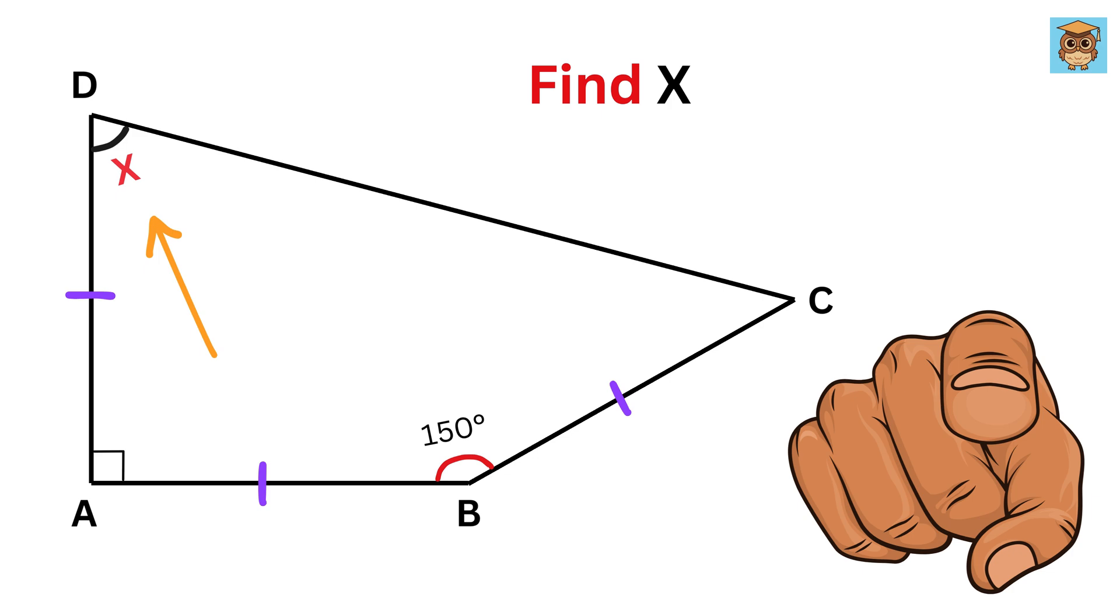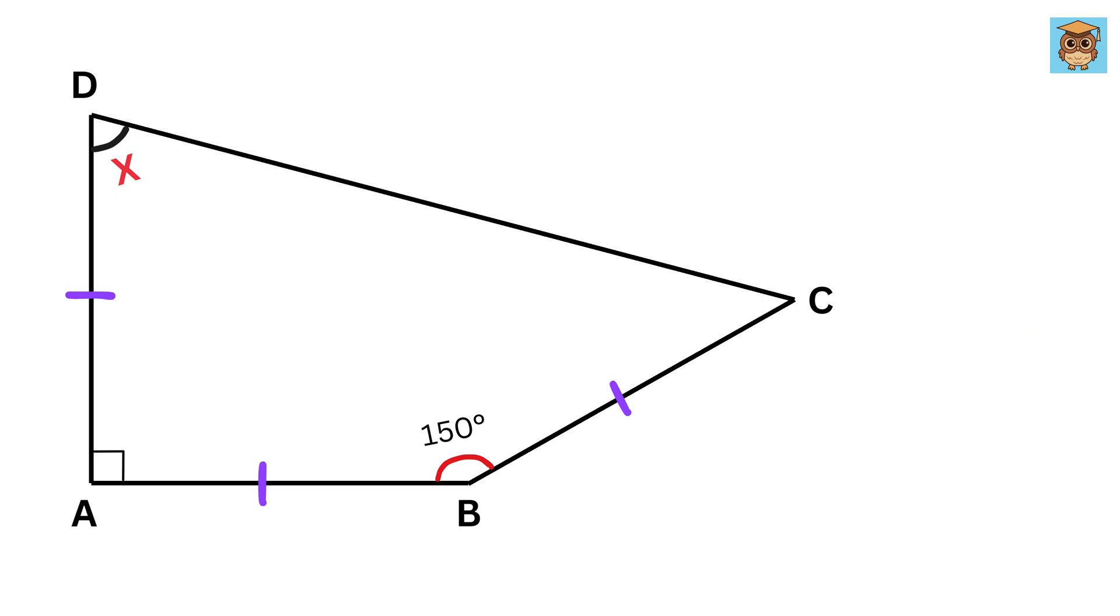So, can you solve it? Okay, in order to solve this problem, we will think out of the box and we will first extend line AB like this and then draw another line which will be perpendicular to line AB from point C like this. Let us call the intersection point as M.